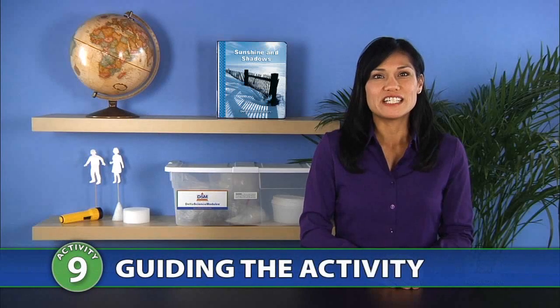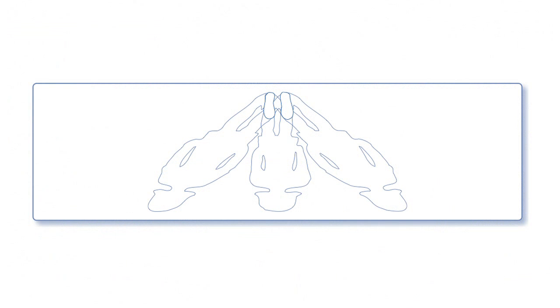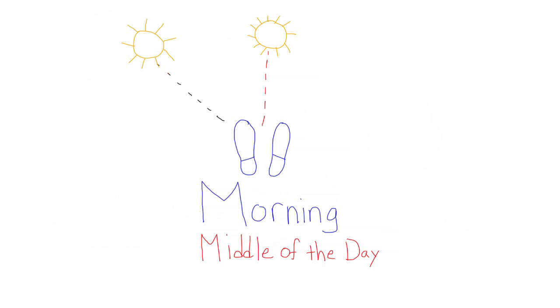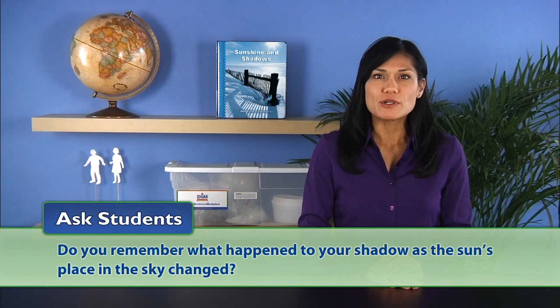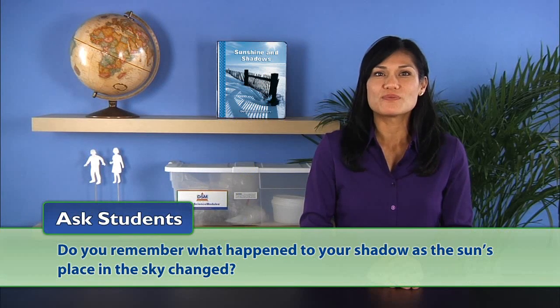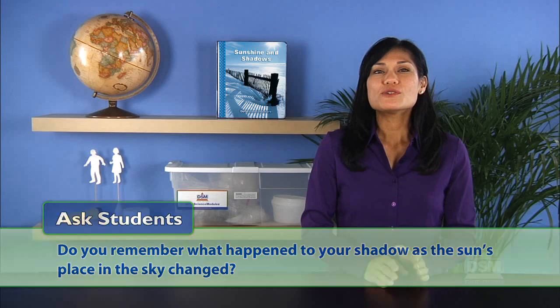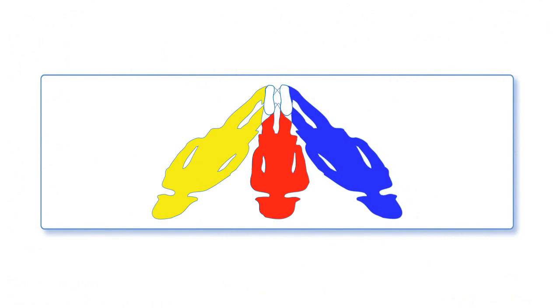To begin the activity, ask students to recall Activity 4, in which they saw that their shadows changed from morning to afternoon. They should remember that the shadows changed because the sun changed its position in the sky throughout the day. Ask students: do you remember what happened to your shadow as the sun's place in the sky changed? Students may say their shadow changed, or they may say it grew shorter or longer.